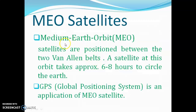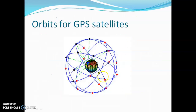Then we have MEO satellites — medium earth orbit satellites. These are placed between the two Van Allen belts, either above or below in that region. An MEO satellite takes 6 to 8 hours to complete one full circle around the earth. We can use these for GPS — global positioning system. Here we can see that when they move and complete a circle, this is our satellite — so we can use these satellites for GPS tracking.